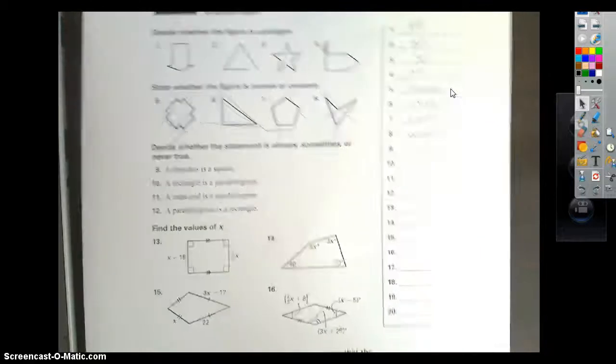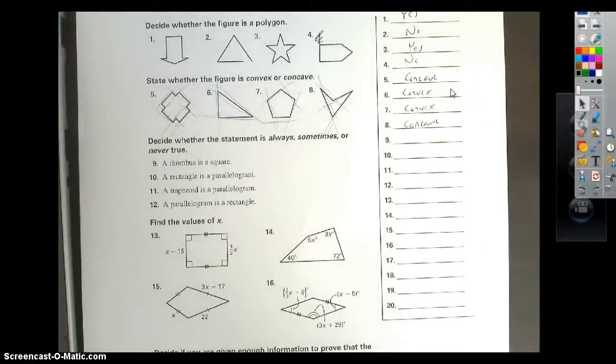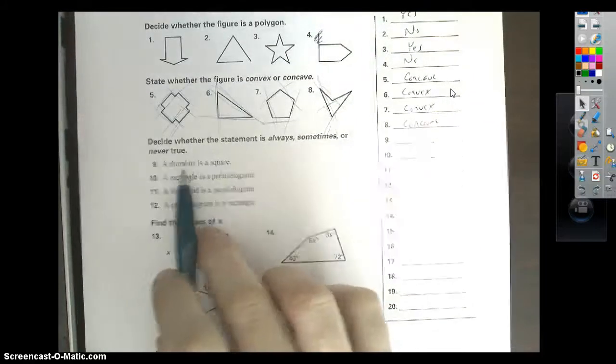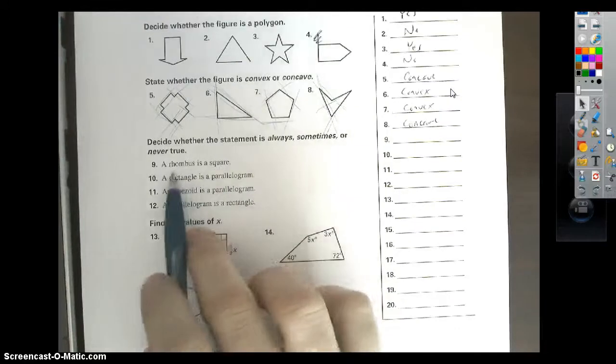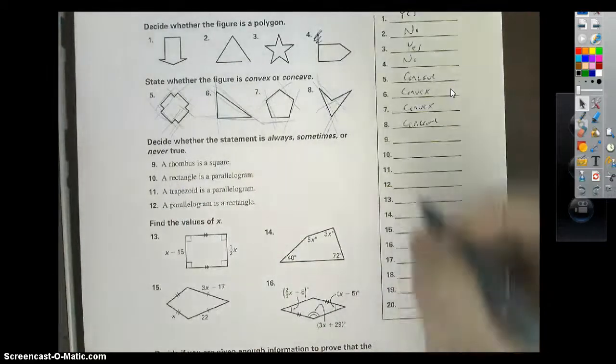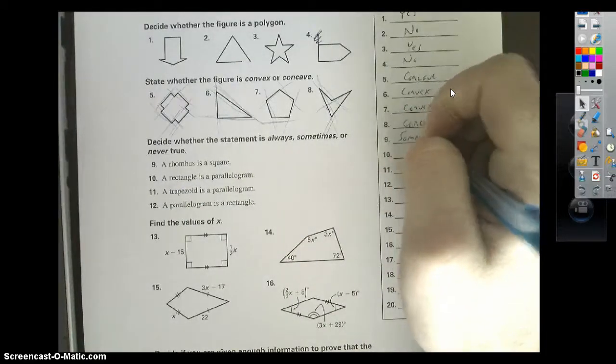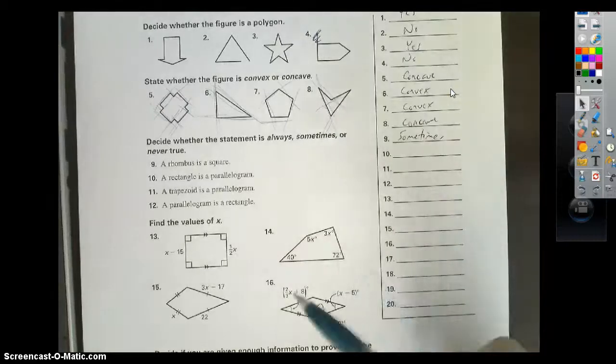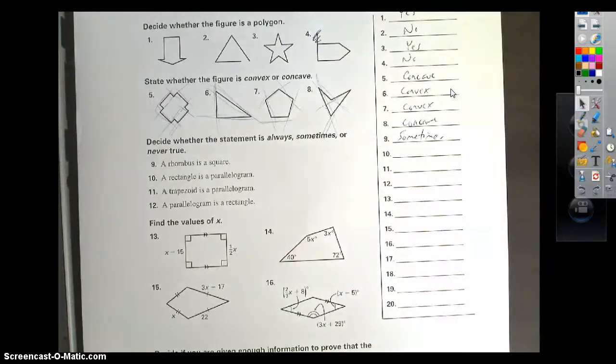Okay, number 9 through 12, decide whether the statement is always, sometimes, or never true. A rhombus is a square. This will be sometimes. So we look at our little family tree that we have on the backboard of our classroom. A rhombus is right above a square on our little family tree, so occasionally a rhombus can be a square.